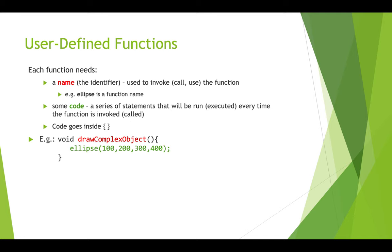When you define a function, you need to give it a name so that you can call it or invoke it. You've already used a lot of function names in Processing — ellipse is a function name, for example. You need a series of statements inside the function — that's what will happen when you call it. The code has to go inside curly braces: you have the function name, then an opening curly brace, your block of code, and then the closing curly brace. In this example, we have the name drawComplexObject, here's our open curly brace, here's our closed curly brace, and here's the code.